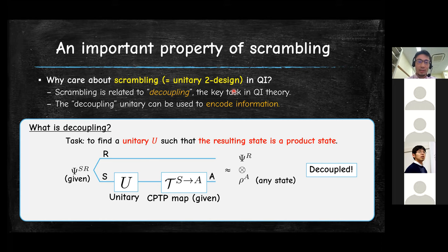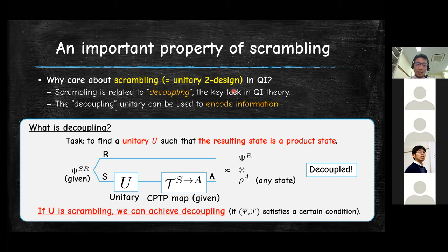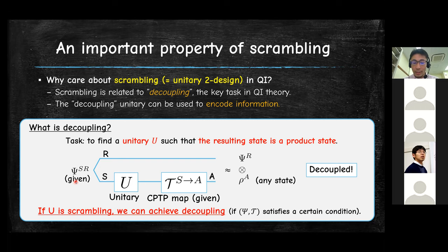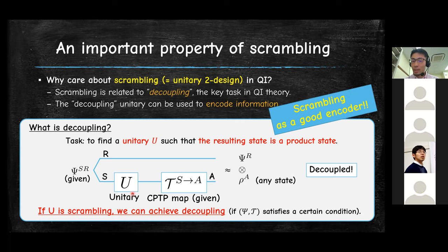What is important is that if we choose the unitary as a scrambling dynamics, we can typically achieve this decoupling task — assuming some entropy conditions on the initial state and the CPTP map are satisfied. Since decoupling is related to encoding of information, if we have a scrambling dynamics, intuitively we can use it for encoding quantum information. This is the landscape: scrambling, decoupling, and encoding of information are all connected.